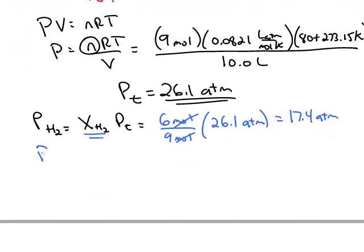You can do the same thing for the other gases. The pressure of nitrogen is its mole fraction. We had 2 moles of nitrogen. So the pressure works out to be 5.8 atmospheres.